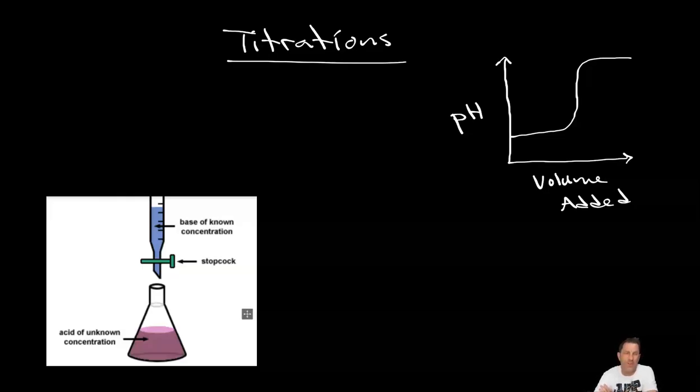Alright, this topic is called titration or acid-base titrations. The titration is a process when we want to know the concentration of an unknown acid or base. To do that we use a known volume and concentration of a base or an acid.